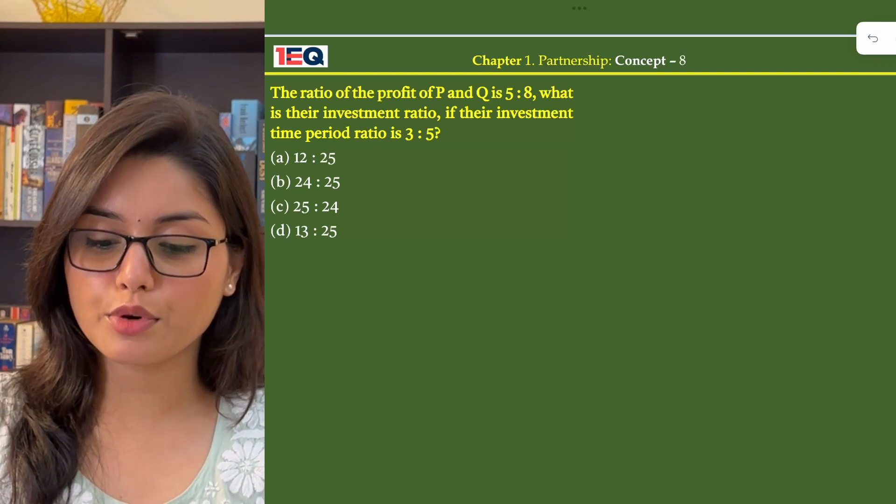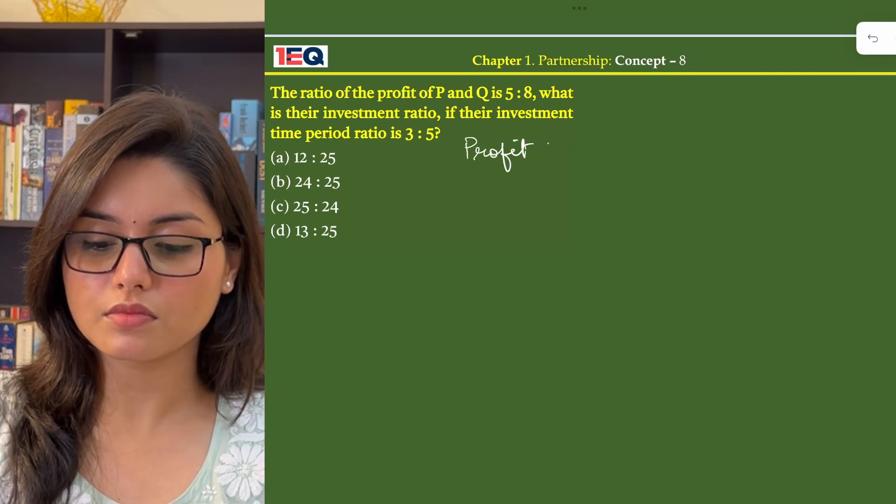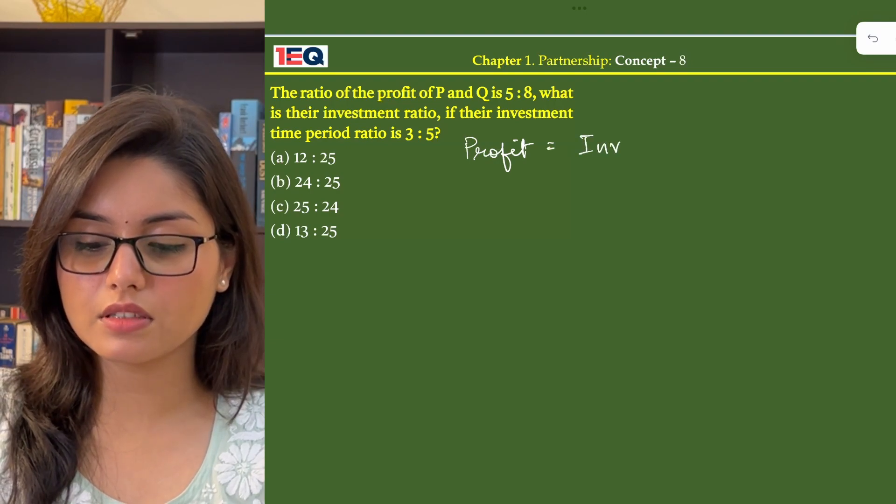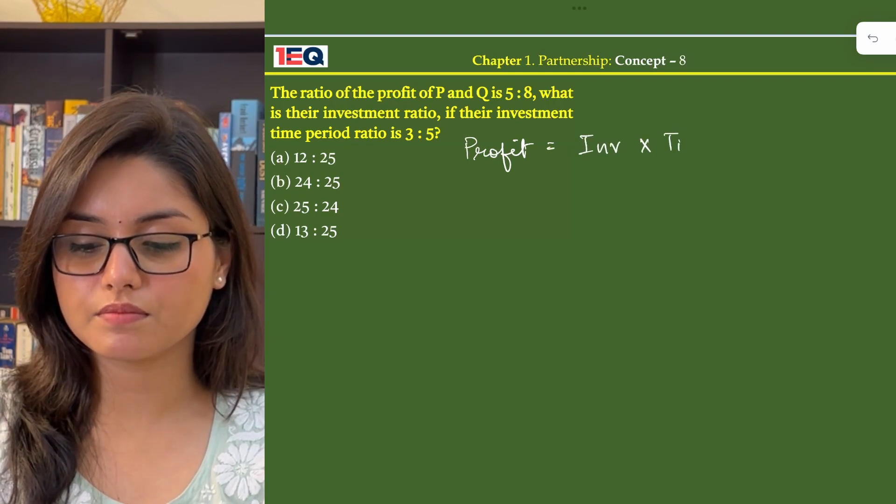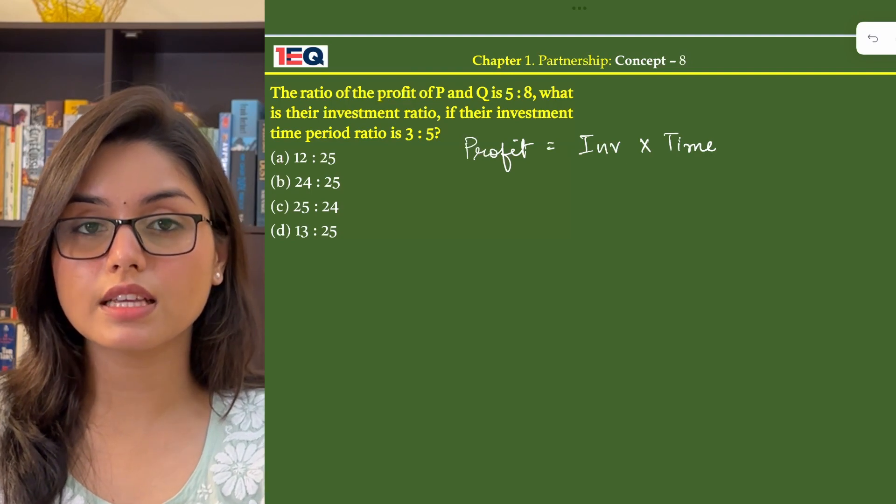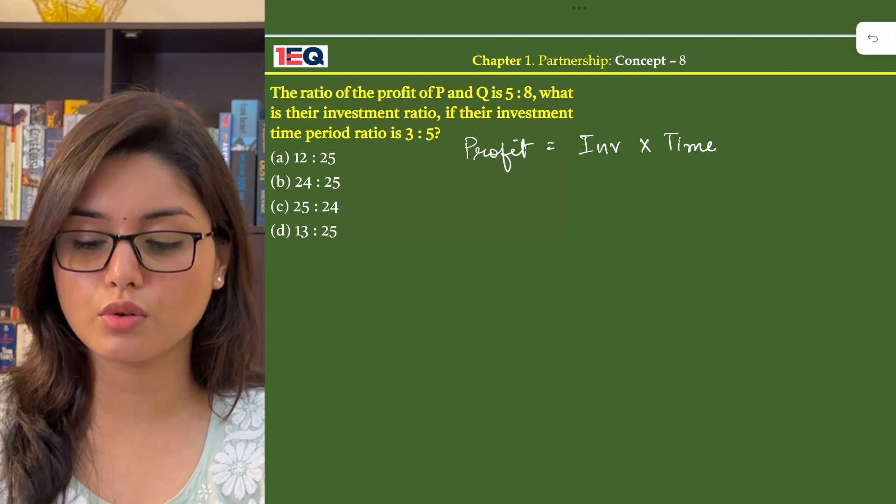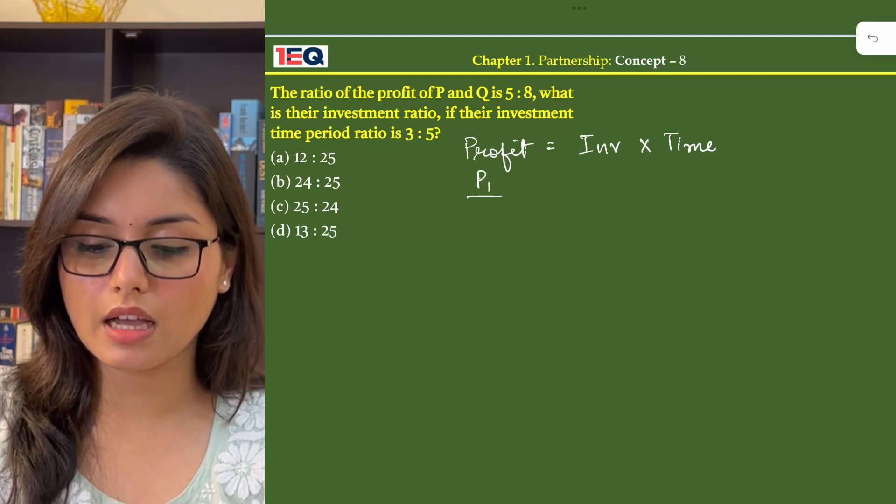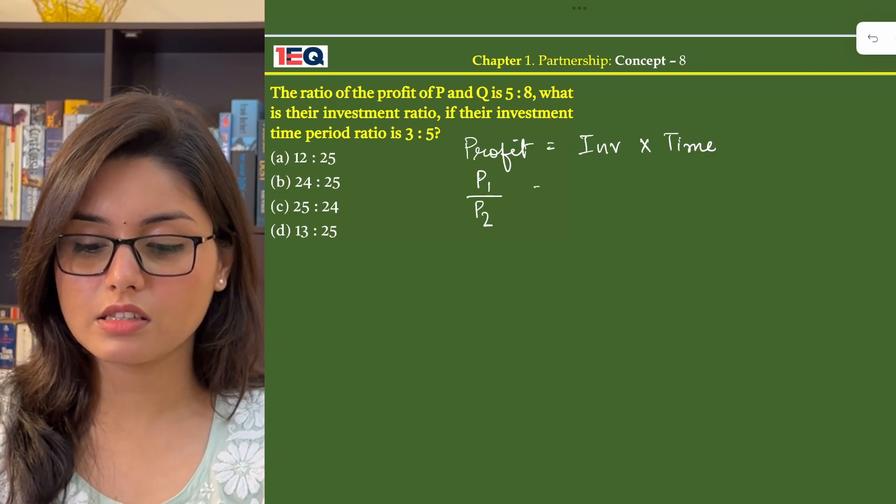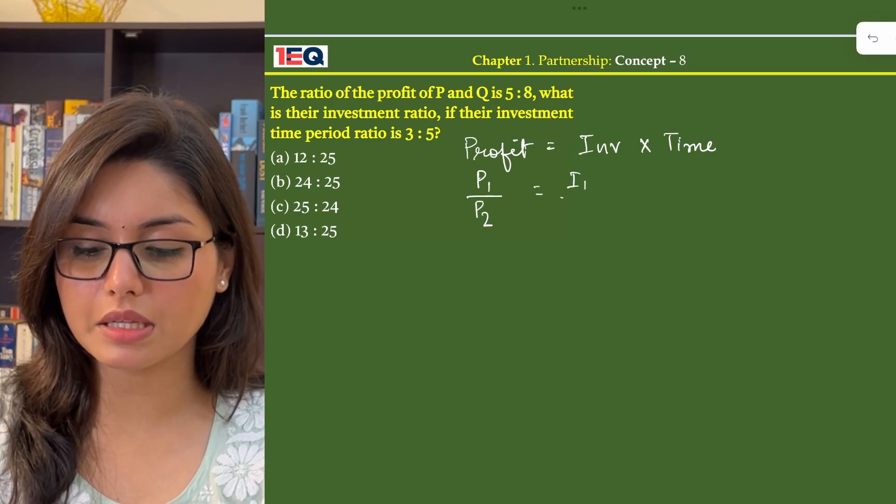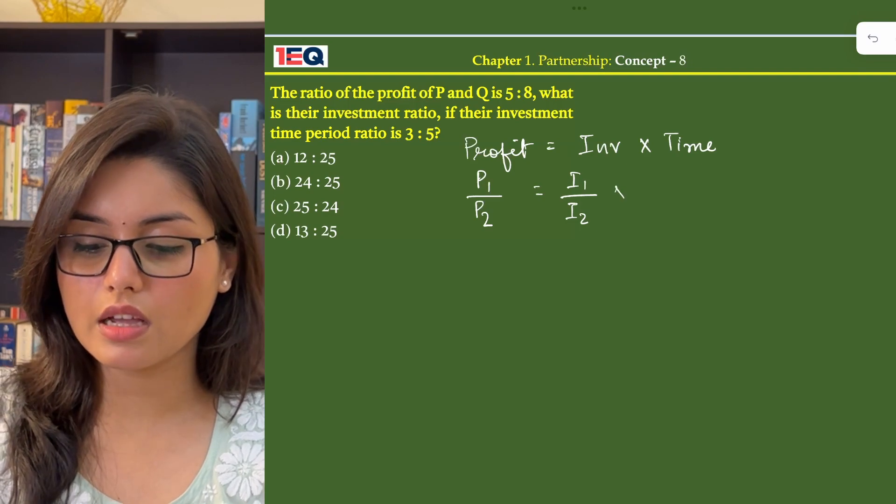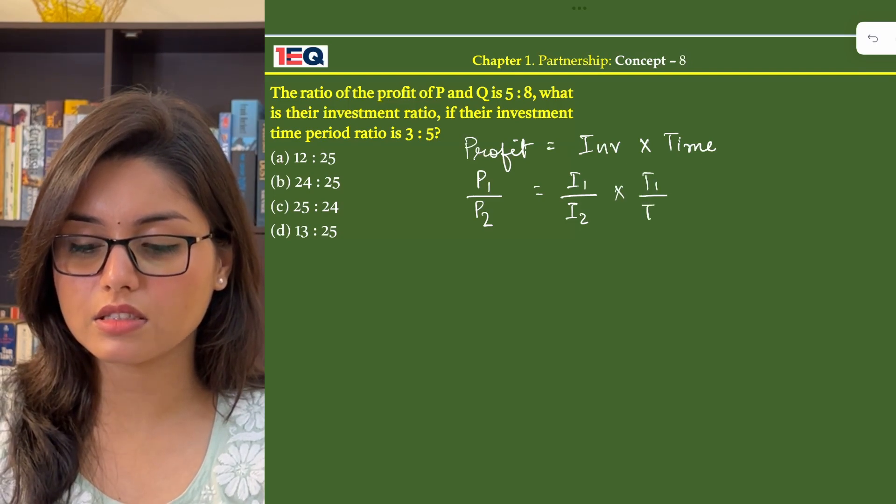Now profit is equal to investment into time. So let's take the profits of P and Q as P1 and P2. Similarly, investments will be I1 and I2 into T1 by T2.